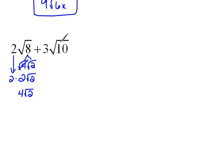For this term, the square root of 10, we really can't do anything. You can't find two things that multiply together to get 10 where one of them is a perfect square. So this would just be plus 3 square roots of 10.